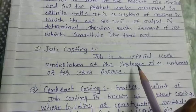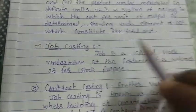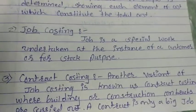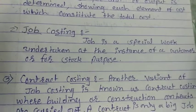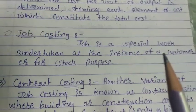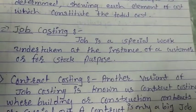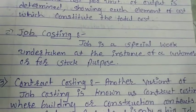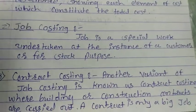Job costing is used because a customer places a special order. For example, a company receives a special order for 10,000 balls. The cost is calculated per job for that specific customer order. This is called job costing.